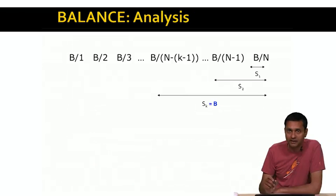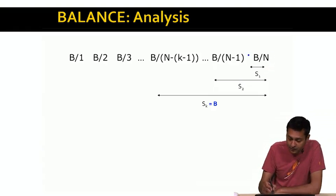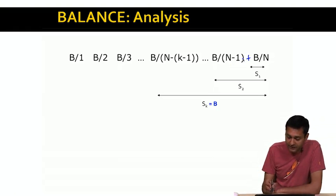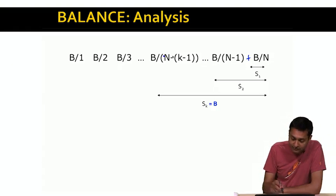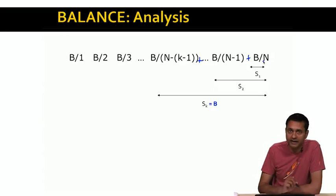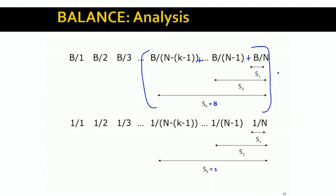Let's look at a graphic showing the allocations of different advertisers. S1, the allocation to the first advertiser, is B/N. S2 is B/N plus B/(N-1). The allocation to the third advertiser is the sum of the first three terms, and so on. The allocation to the Kth advertiser is the sum of the last K terms in the series, from B/(N-K+1) all the way to B/N. We want to find the smallest K such that this sum is greater than or equal to B.